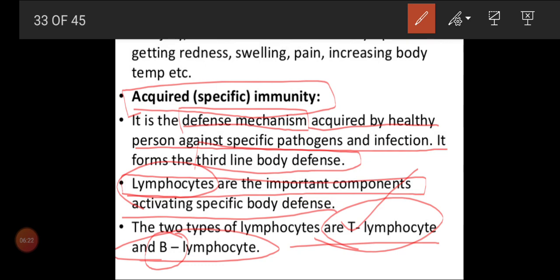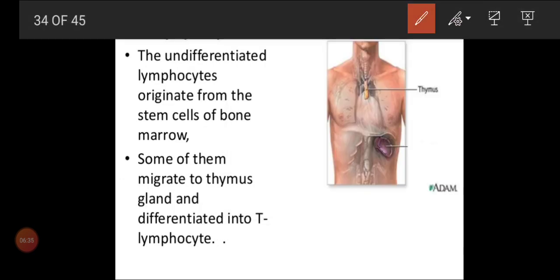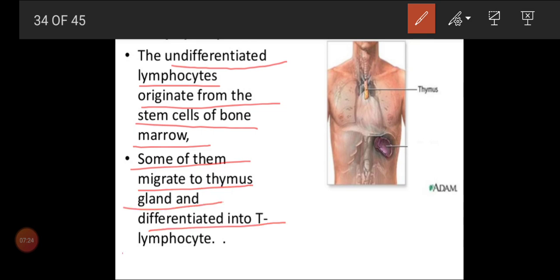The formation of T lymphocytes is in the bone marrow, but they are undifferentiated before. These undifferentiated lymphocytes originate from the stem cells of bone marrow. The stem cells have the capacity to form lymphocytes, white blood cells, and red blood cells — everything is produced in the bone marrow. The stem cell has totipotency. Some of these cells migrate to the thymus gland and differentiate into T lymphocytes.